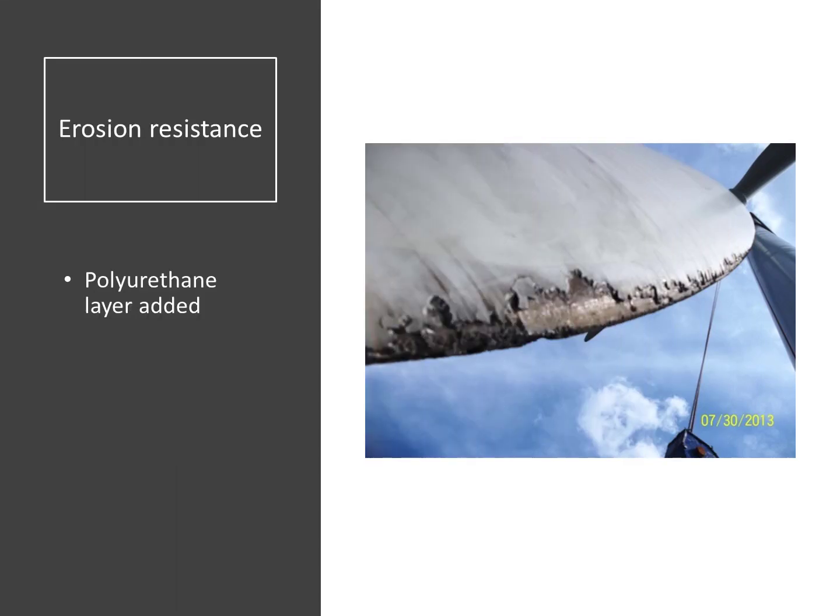Here we can see the tip of a windmill blade with noticeable damage due to erosion. Erosion is caused by high velocity impact of particles like sand, hail, or water droplets. Metals have high erosion resistance, but they have been replaced by polymer-based composites that are lightweight and much more fatigue resistant. Erosion affects windmill blades, helicopter rotor blades, aircraft, and any composite structure subject to aerodynamic loads where particles or water droplets may exist. Longer blades with higher tip velocity are more energy efficient, but higher tip velocity exacerbates the erosion problem.